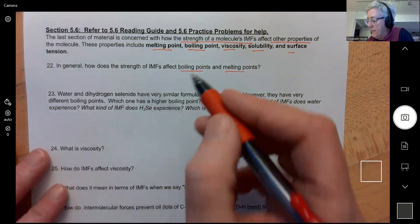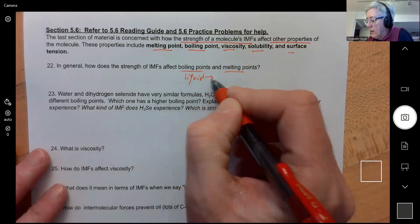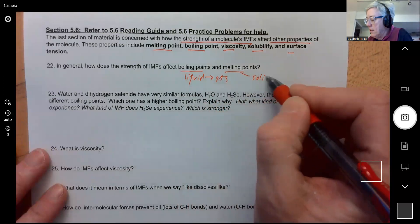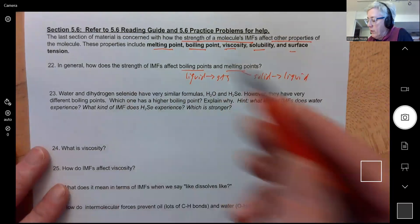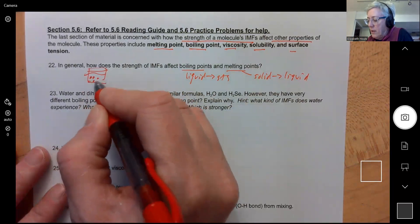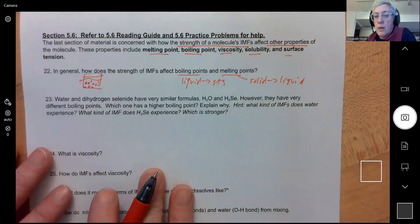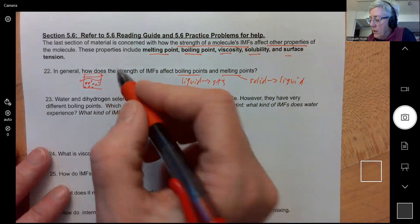Well, boiling is from a liquid going to a gas and melting is a solid going to a liquid. So if you have a liquid, for example, and it's held together, all the molecules in that liquid are held together quite tightly because they have strong intermolecular forces, it's going to be harder to get them to boil.